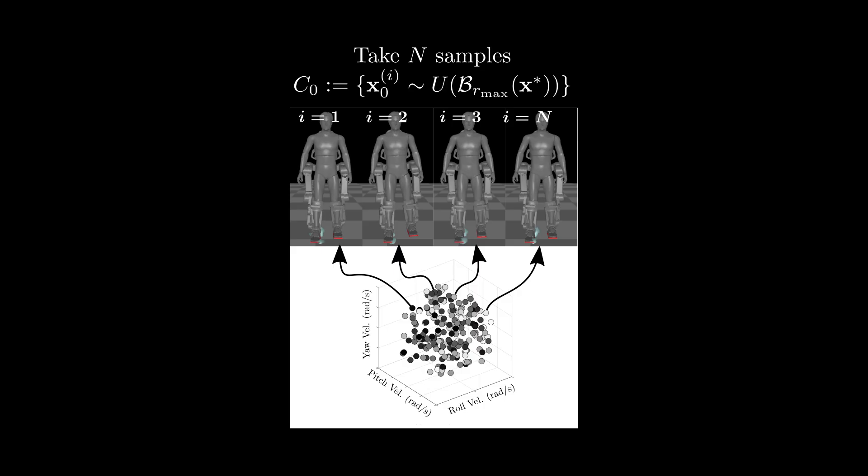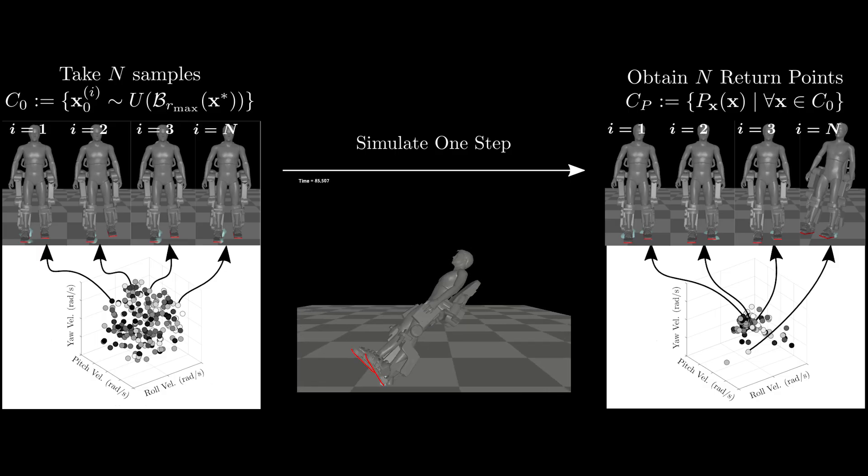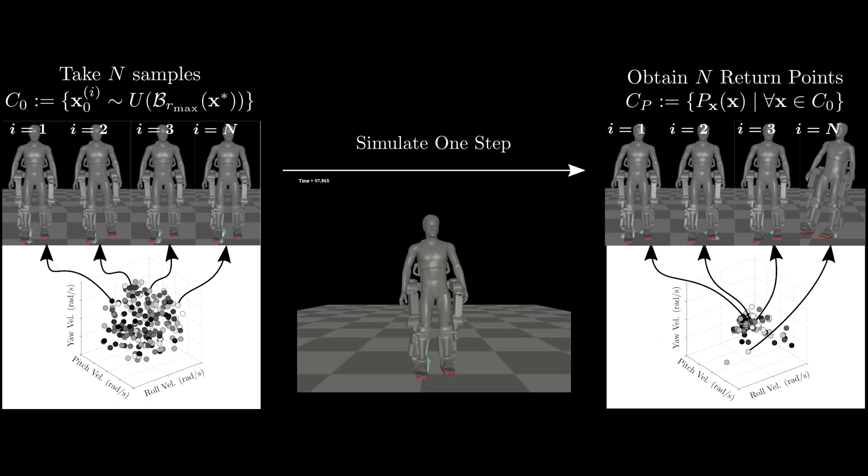We then apply perturbations to the fixed point of the nominal limit cycle and use a simulation environment to obtain the subsequent points of the step-to-step dynamics by simulating the system forward one gait cycle.